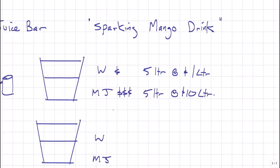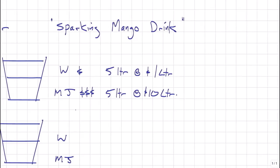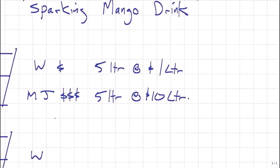So we're now going to understand how much one unit of sparkling mango drink costs. So the water will cost us how much everybody, $5. The mango juice costs $50.